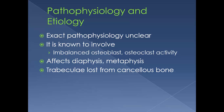Looking at the pathophysiology and etiology, until the age of 35 — which is the time of peak bone mass — formation occurs more rapidly than resorption. The exact pathophysiology is unclear. It is known to involve an imbalance in the activity of osteoblasts, which form new bone, and osteoclasts, which resorb bone.